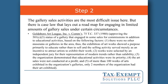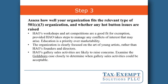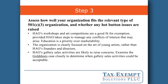There are some factors from Goldsboro that we're going to want to rely on when drafting the narrative. Step three: assess how well your organization fits the relevant type of 501c3 organization and whether any hot-button issues are raised. HAO's workshops and art competitions are a very good fit for exemption — those are clearly educational activities the IRS would generally have no problem approving. It's clear that HAO is taking steps to manage conflicts of interest and is making education a priority over marketability of the art. The organization is clearly focused on the art of young artists rather than its founders and directors. However, the gallery sales activities are likely to raise some concerns, but we're going to look at the Goldsboro case and emphasize those factors that will put it within that case as much as possible.